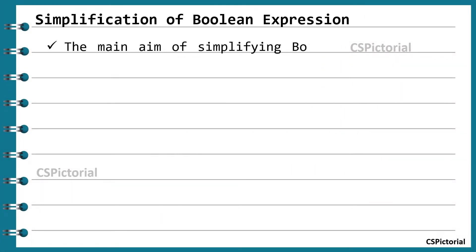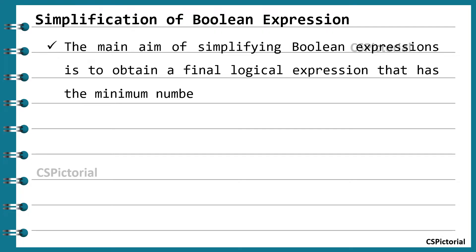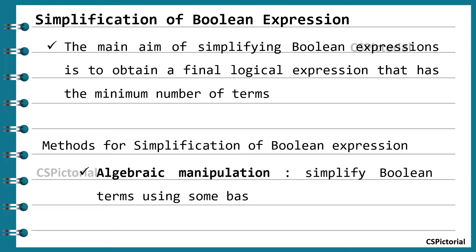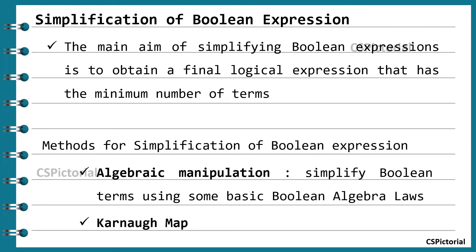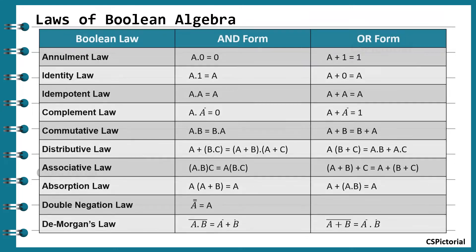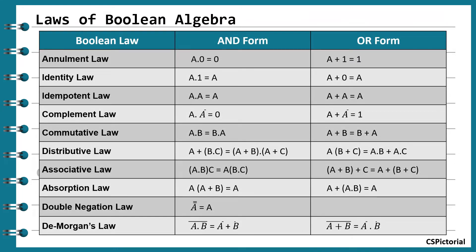The main aim of simplifying Boolean expressions is to obtain a final logical expression that has the minimum number of terms, and thereby requires the minimum number of logic gates to implement. There are two popular methods: algebraic manipulation using Boolean algebra laws, and Karnaugh maps. A detailed video explaining these laws is available in our channel — kindly check the link given in the description.